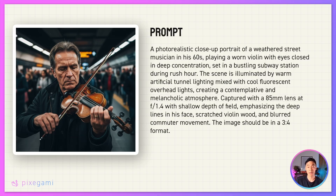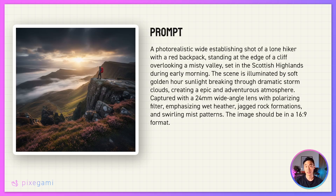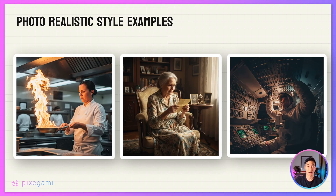For this portrait example, I used a close-up portrait as a shot type and a street musician in their 60s as the subject. For the lighting, I specified warm artificial tunnel lighting mixed with cool fluorescent overhead lights — and you can see the results here, it looks pretty good and followed the instructions quite well. Here's another example: a mountain hiker shot in the Scottish Highlands, with a wide shot to capture the whole landscape and rugged alpine terrain during golden hour. You can also get quite technical with the camera — here we specified a 24mm wide angle lens at f8. If you use the right terms like these, it might help you get the shot you want. The images almost have a cinematic quality to them, and while you can still tell they're AI generated, they still look pretty good.